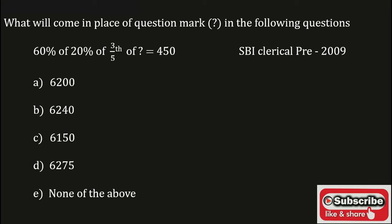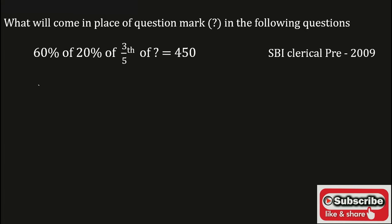See the given question: 60% of 20% of 3/5 of what is equal to 450? Here 60% is 60 upon 100, of 20% is into 20%, that is again 20 upon 100, of 3 by 5 is into 3 by 5. Of what is nothing but in place of question mark, consider it as equal to